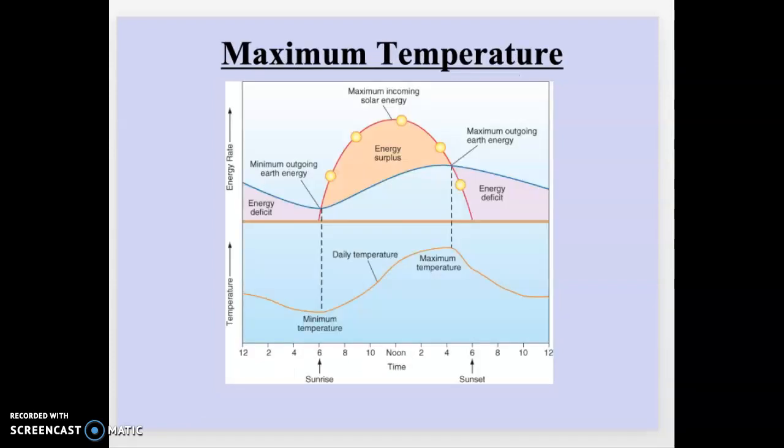When talking about daytime temperature, it's really interesting what happens for maximum temperature. You see on this graph, temperatures on the bottom, incoming solar radiation in this red line, and outgoing longwave radiation from the Earth in this blue line. The maximum temperature happens around 4 or 5 in the afternoon. Why is that happening? You might think it would be happening at noon when the incoming solar radiation is highest.